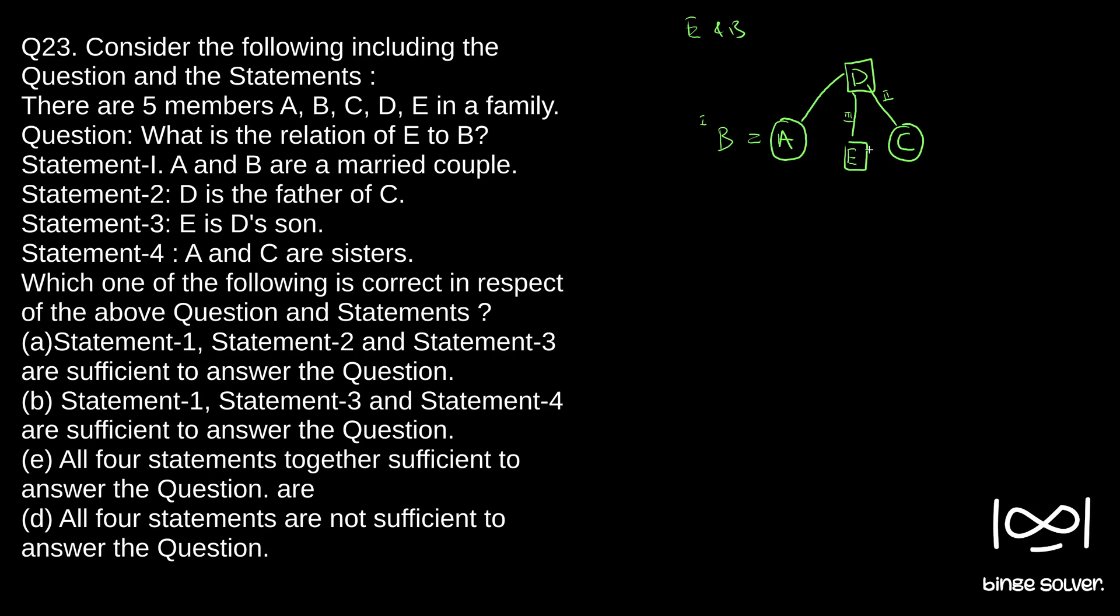Fourth statement is one that connected these two to get a relationship between B and E. So we now know the relationship between B and E, but for that we need what all statements. First statement is needed to connect B to A, so statement one is needed. Statement two, D is the father of C, to connect A and C. Since we need two statements.